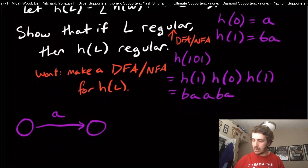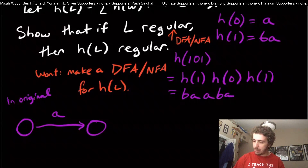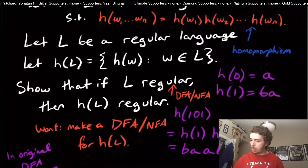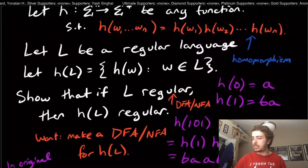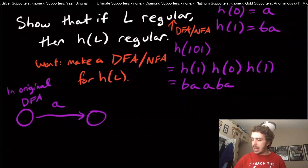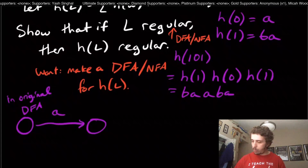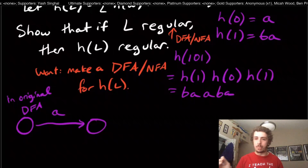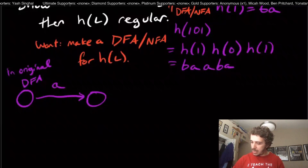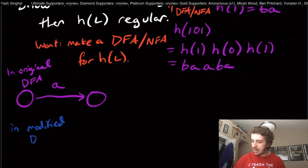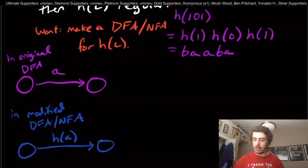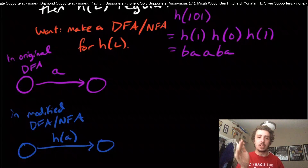Say we have a transition in the original DFA — we can say without loss of generality DFA since DFAs and NFAs are equivalent. The homomorphism property says we can break up a string into each of the characters and apply H to each individual character. So if we're trying to read H of a particular string, when we take this transition, by the homomorphism property we want to go from this state to this state while reading H(a).